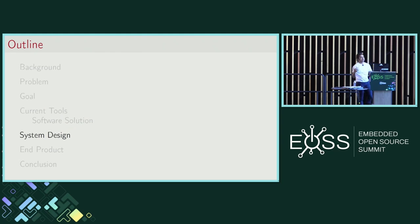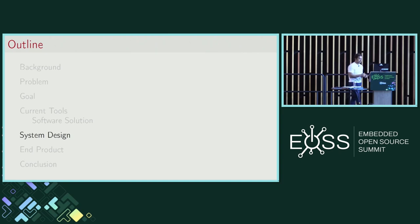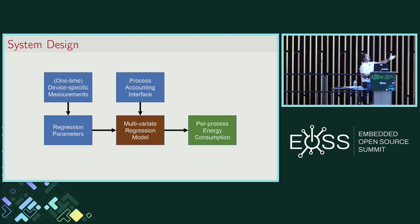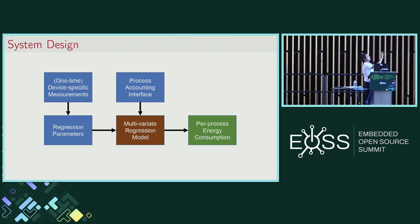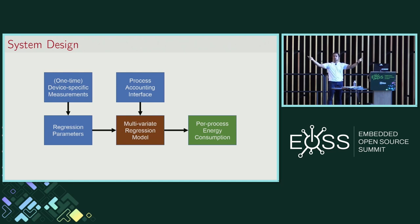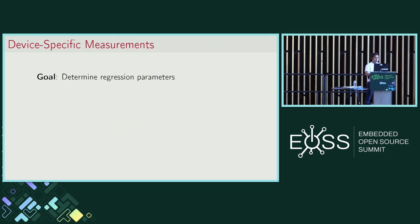Now we saw our problem statement, our goal to calculate energy reliably, and the challenges with the state of the art. Let's take a look at the system design I'm working on. On the screen right now you can see a simple flowchart — a very high-level system design. The leftmost blue boxes represent the inputs. The brown box represents a regression model. And the green box is the output, which is what we're driving for. This is a regression model, and regression comprises two inputs: the regression parameters, and the inputs to the regression.